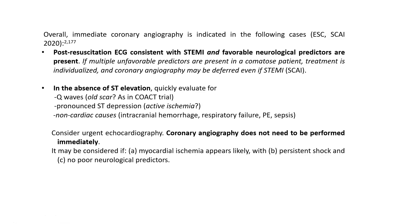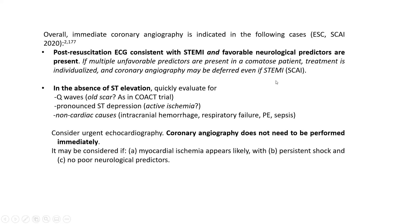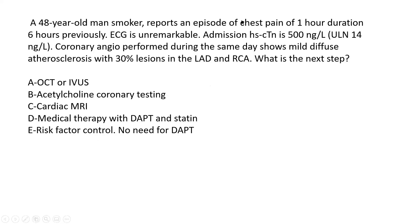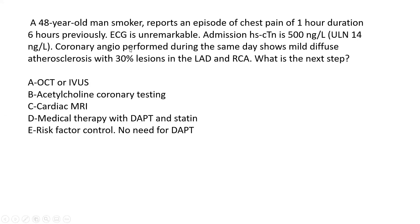Moving to MINOCA. A 48-year-old man, smoker, reports an episode of chest pain of one hour duration six hours previously. EKG is unremarkable. Admission HS troponin is 500. Coronary angiography performed the same day shows mild diffuse atherosclerosis with 30% lesions in the LAD and RCA. This patient presents with typical chest pain, significantly high troponin with delta — and cath shows nothing. That's MINOCA. What is the next step? Options: OCT or IVUS, acetylcholine coronary testing, cardiac MRI, medical therapy with DAPT and statin, or risk factor control only with no DAPT.